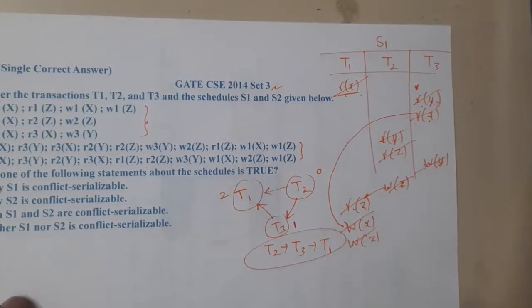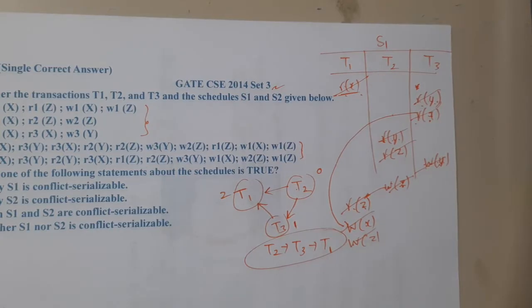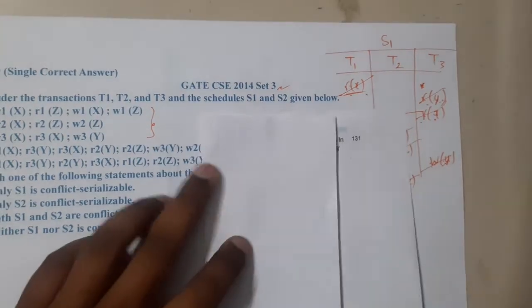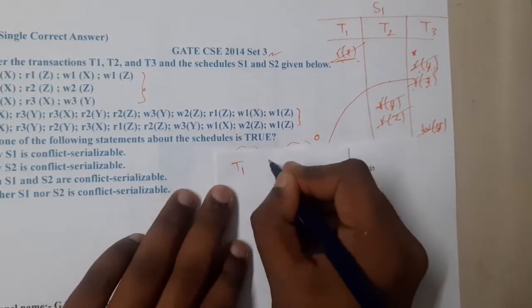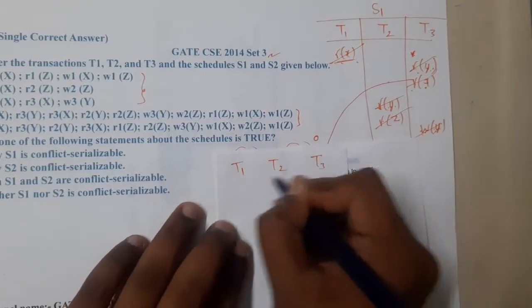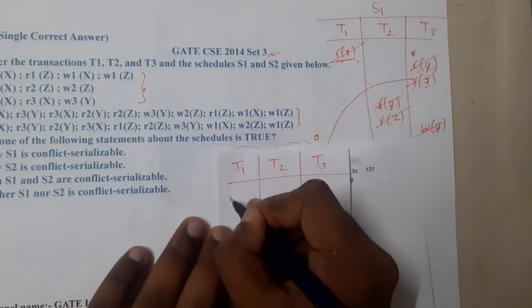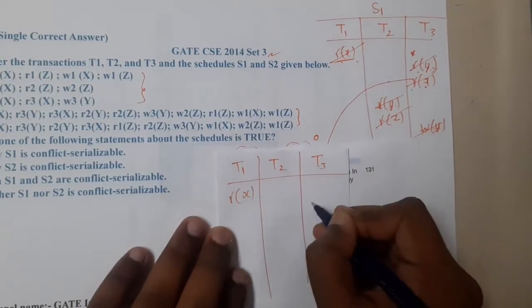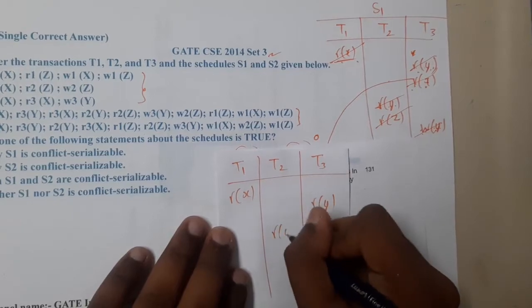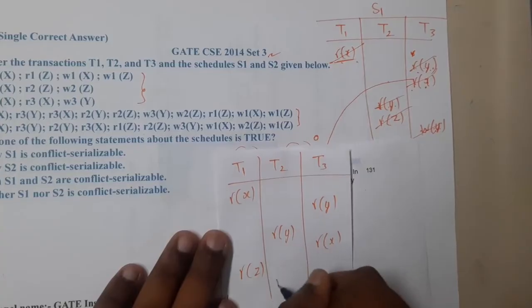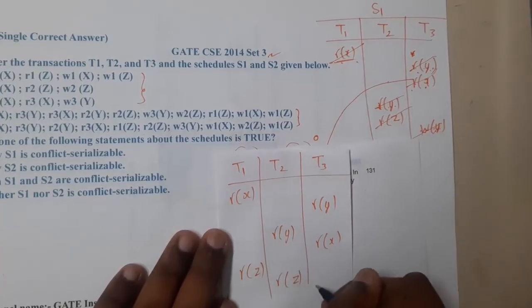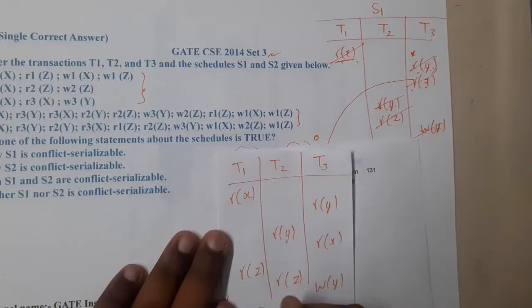Now let us try for the second schedule S2. Here we also have T1, T2, and T3. The operations are: Read(X), Read(Y), Read(Y), Read(Y), Read(X), Read(Z), Read(Z), Read(Z), Write(Y), Write(X).